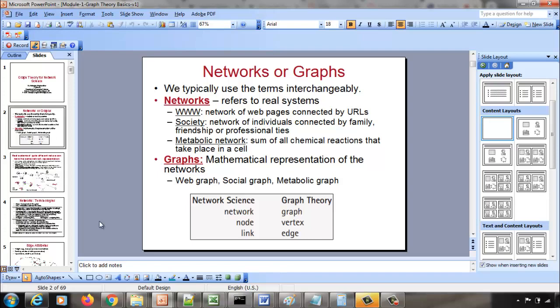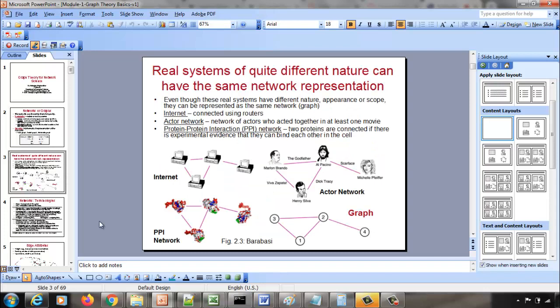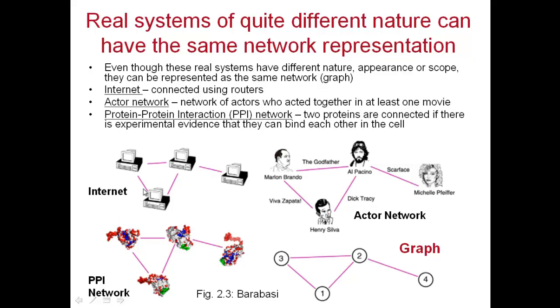A graph is basically a representation of the network. I would say it is a mode of abstraction. Look at these four networks: one is a kind of network of computers — you can call it the internet. Then this is an actor network, and this is a protein-protein interaction network. Each entity here is a protein, and there is an edge between two proteins if they really have some reaction between them.